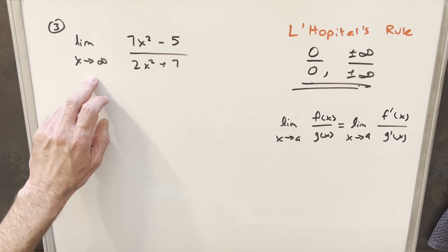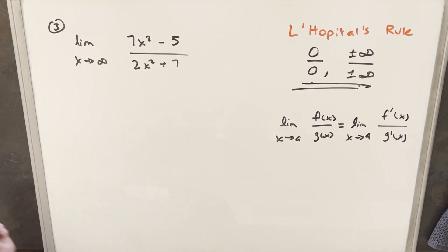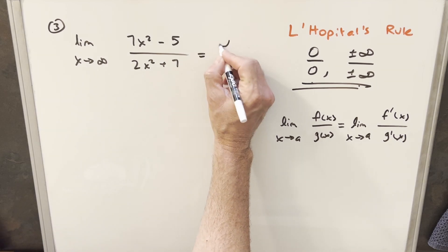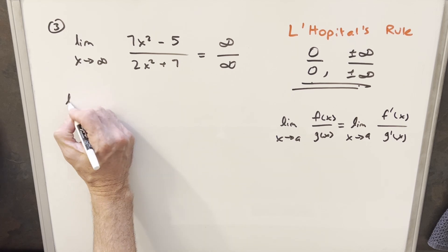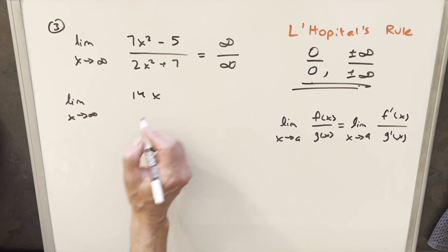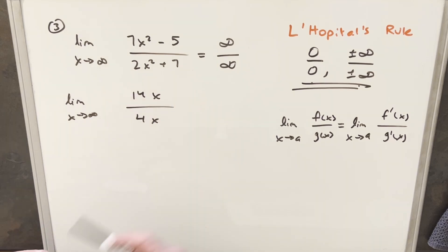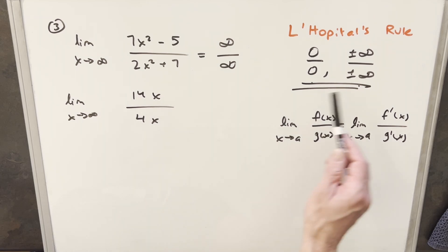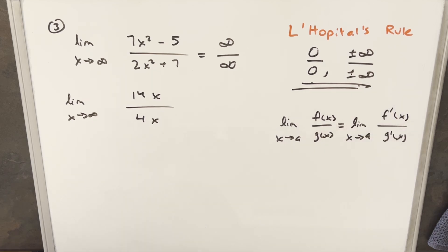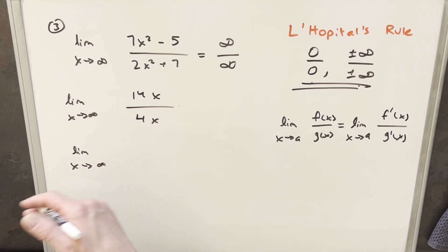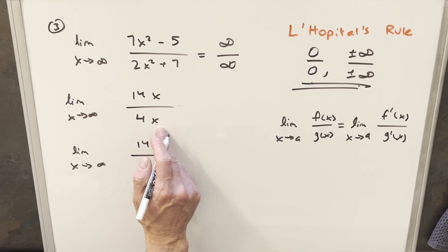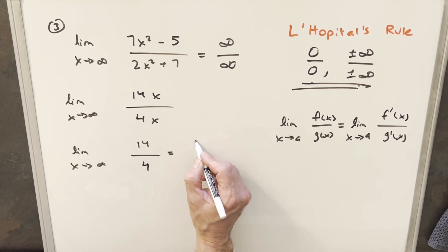Problem 3: the limit as x approaches infinity of 7x squared minus 5 over 2x squared plus 7. Similar to the previous one but with squared terms. Evaluating at infinity gives infinity over infinity — an indeterminate form. Differentiating the numerator gives 14x and the denominator gives 4x. Evaluating this at infinity is still infinity over infinity, so we apply L'Hôpital's Rule a second time. The derivative of 14x is 14 and of 4x is 4. This gives 14 over 4, which simplifies to 7 over 2.